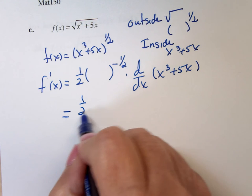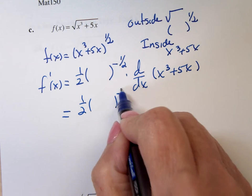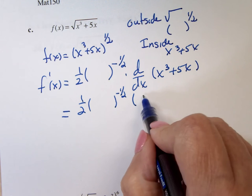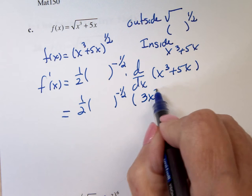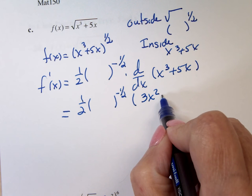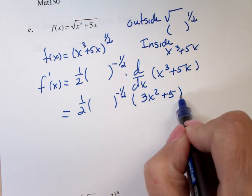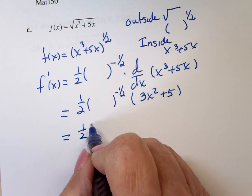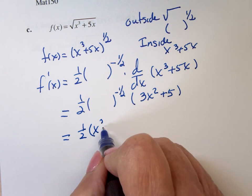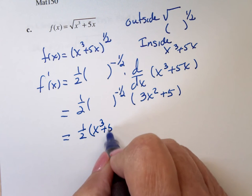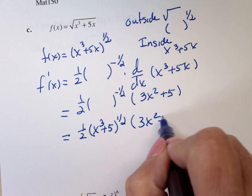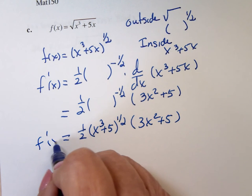Which is one-half times the blob to the negative one-half times, what's the derivative of the blob? 3X squared plus 5. So one-half, the blob is X cubed plus 5 to the one-half times 3X squared plus 5. That's your derivative.